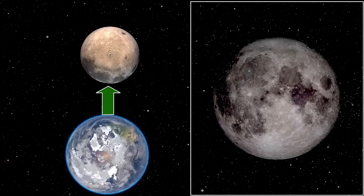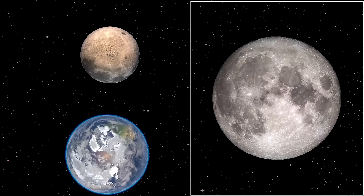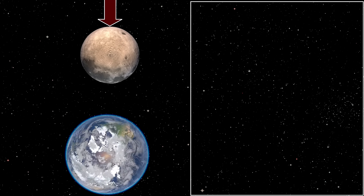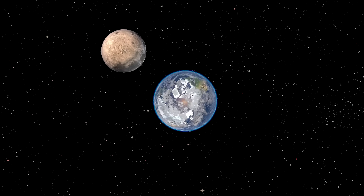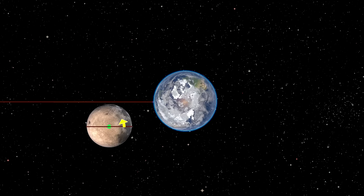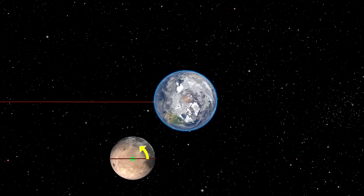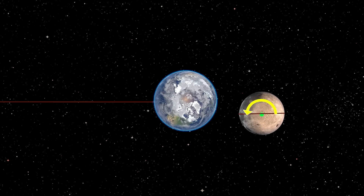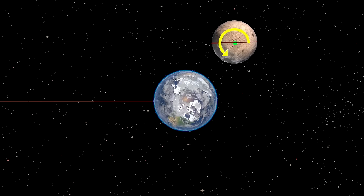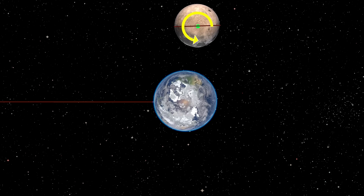Hello friends, welcome to this episode of Science for Common Man. It's interesting to note that the Moon always shows the same face to Earth, and from Earth we never get a chance to see the faraway side of the Moon. This happens because while orbiting Earth, the Moon spins on its own axis and completes exactly one rotation on its own axis by the time it completes one revolution around Earth.